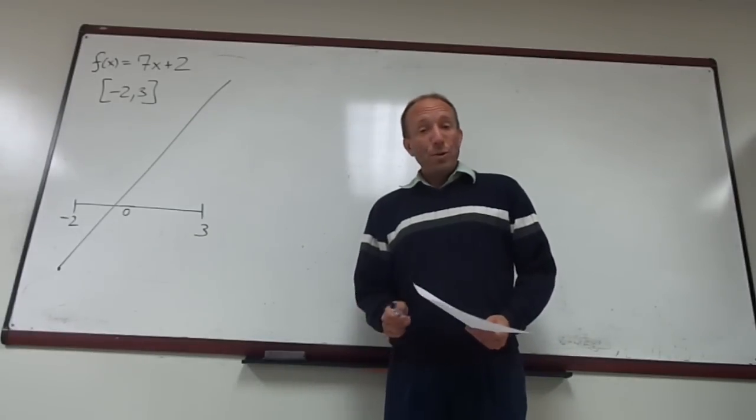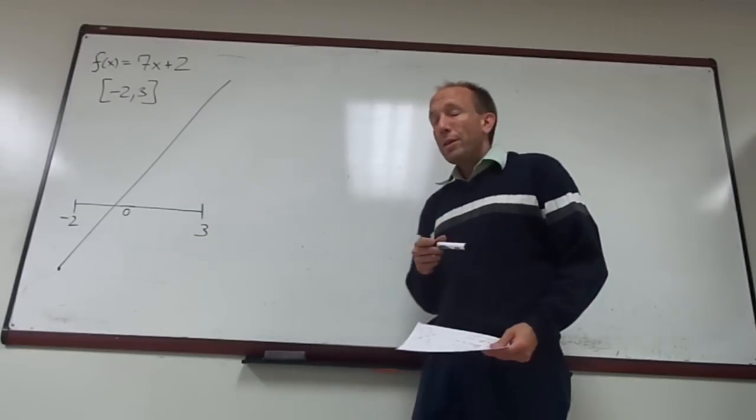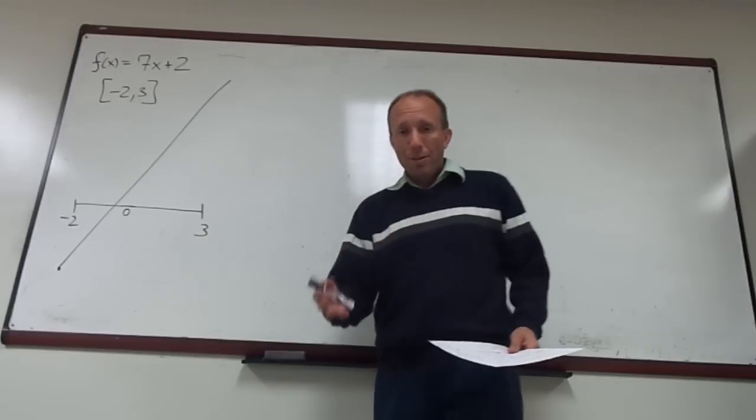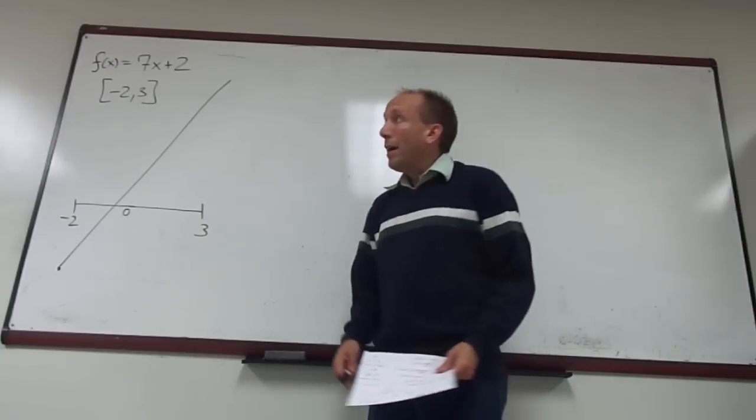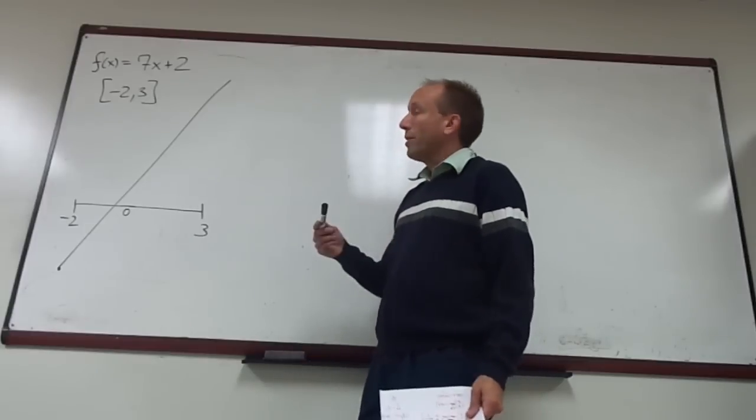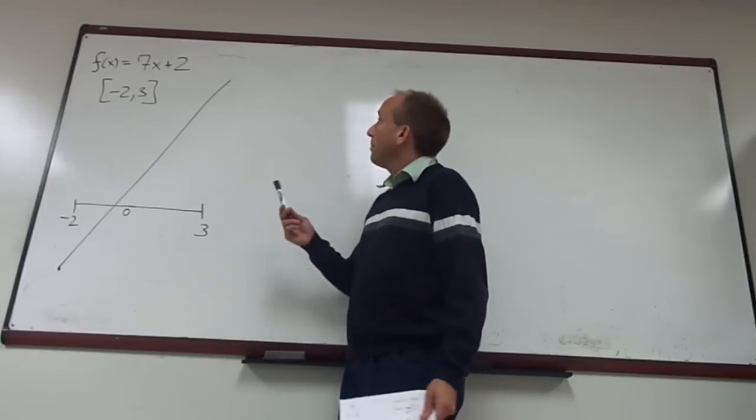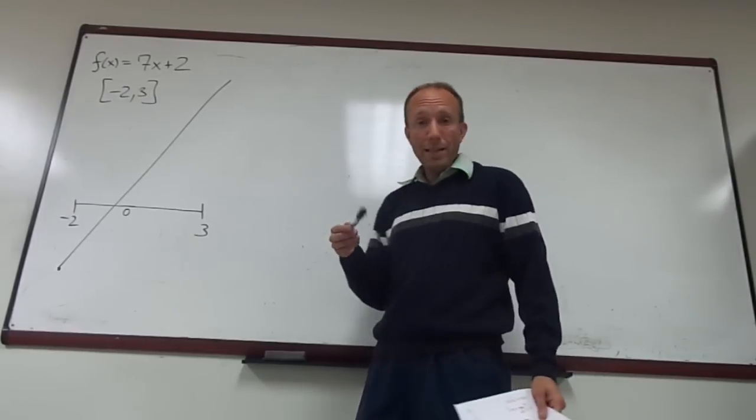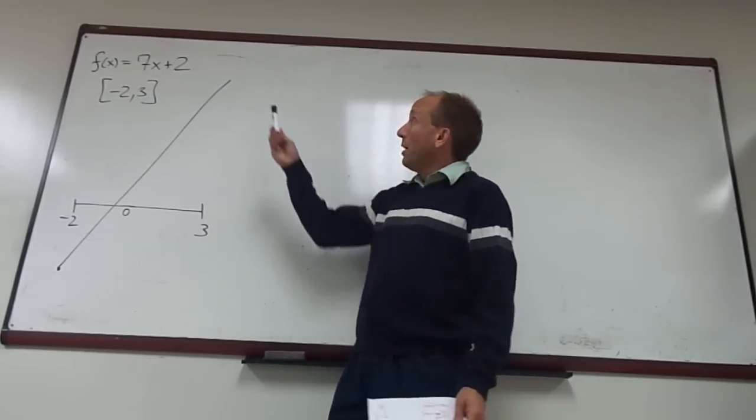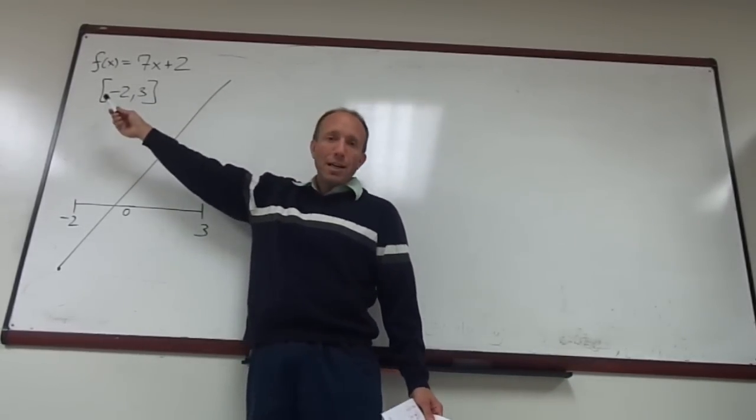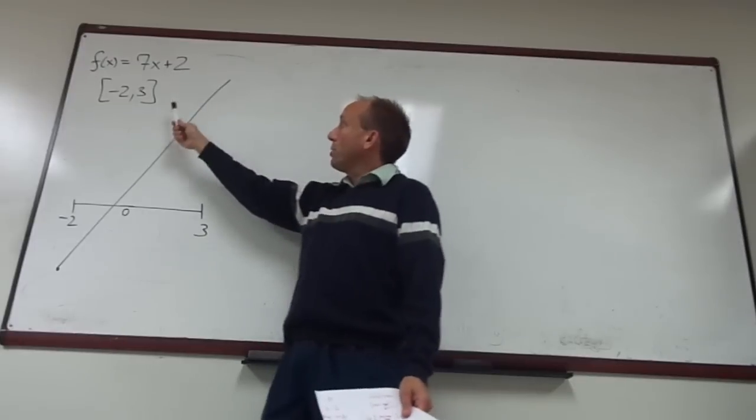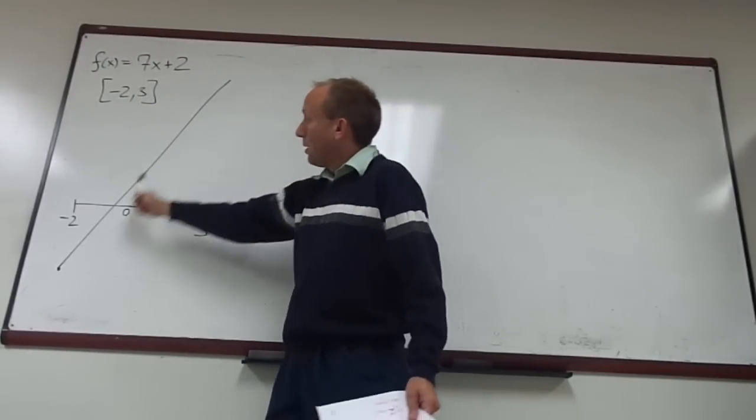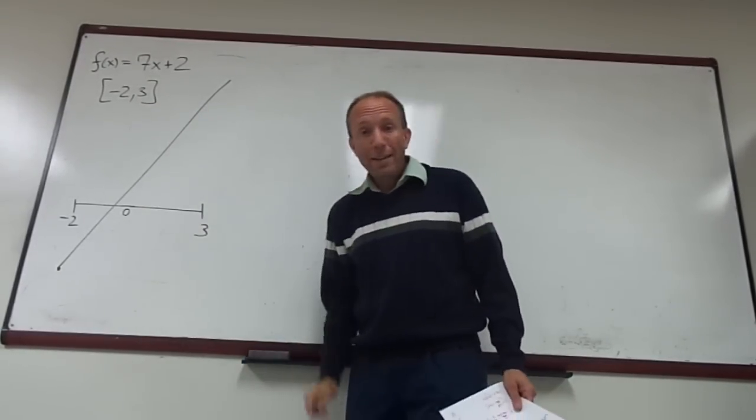So the example I want to do is actually calculating an integral using the basic material that we've already learned. Here's the example: it's similar to one on the homework assignment. Let's suppose we take the function 7x plus 2 and we use the interval from negative 2 to 3. I've already drawn a rough sketch of that, it's just a straight line with a slope of 7.